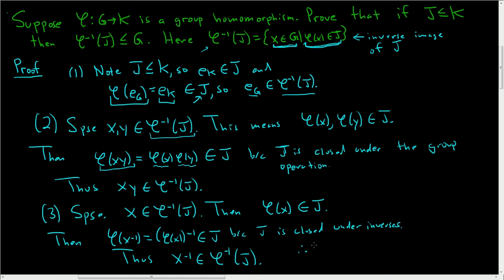Therefore, the inverse image of J is a subgroup of G. We showed all three things: we showed it was non-empty and contains the identity element, we showed it was closed under the group operation, and we showed it was closed under inverses. It takes some getting used to when you first work with the inverse image — it's not hard, it just takes some practice. I hope this helps.